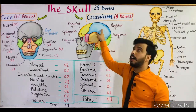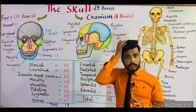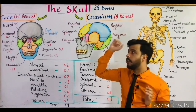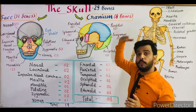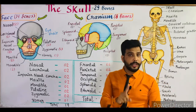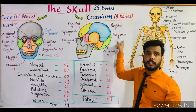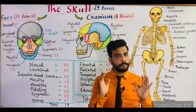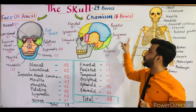Next are the parietal bones — these are 2 in number. Both parietal bones are fused at the center of the head, one on each side. Next is the temporal bone — one is situated here and another one here, so there are a total of 2 temporal bones present in the cranium.